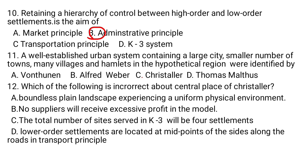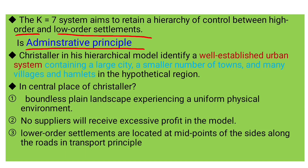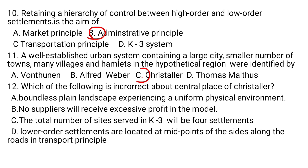Question number eleven: A well-established urban system containing a large city, smaller number of towns, many villages and hamlets in a hypothetical region was identified by: A) Von Thünen, B) Alfred Weber, C) Christaller. Christaller identified a well-established urban system containing a large city, smaller number of towns, and many hamlets and villages in a hypothetical region — this is central place theory. The answer is C.